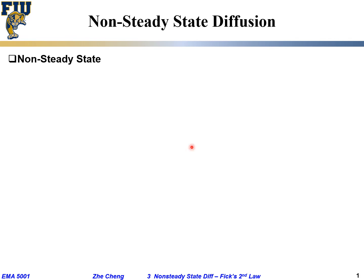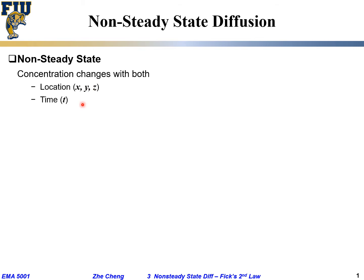After we talk about steady-state diffusion, we're going to talk about non-steady-state diffusion, which means the concentration may change with time, and the flux may also change with time. In non-steady state, the concentration changes with both location and time — it has to change with location, otherwise it's equilibrium where everything is the same everywhere — and the flux now may change with time.